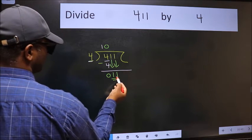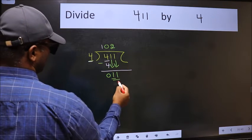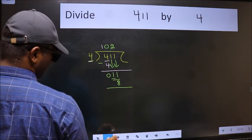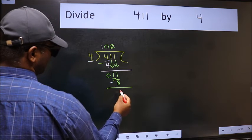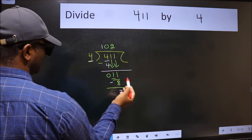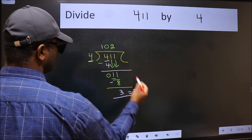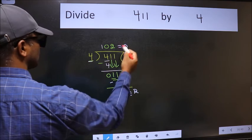Now 11, a number close to 11 in 4 table is 4 times 2 equals 8. Now we should subtract, we get 3. No more numbers to bring it down, so we stop here. This is our remainder and this is our quotient.